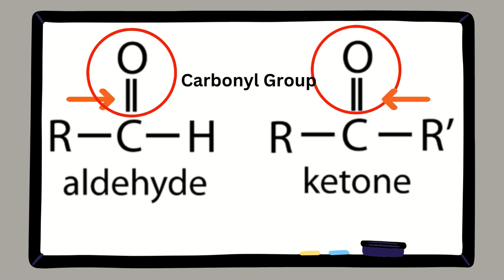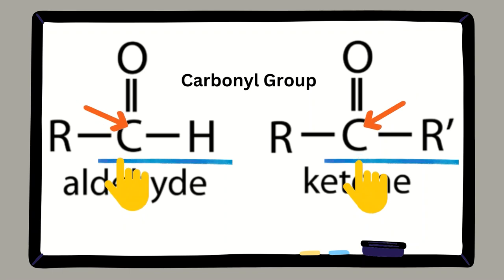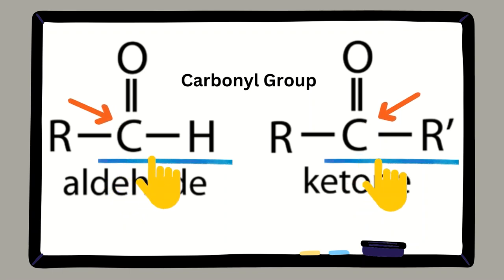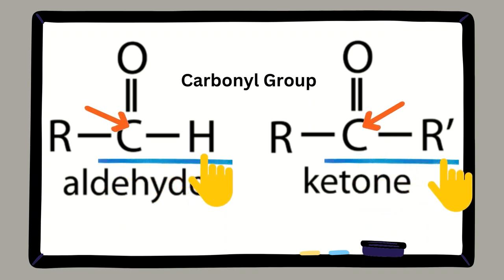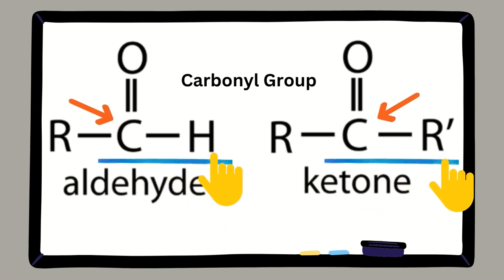Aldehydes and ketones are organic compounds that contain a carbonyl group — a carbon double bonded to oxygen — bonded to a carbon atom. Aldehydes have the carbonyl group at the end of the carbon chain, while ketones have it in the middle.